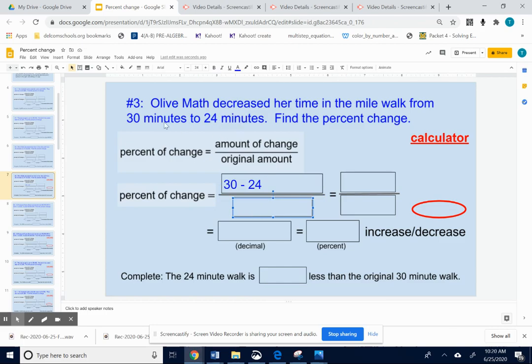Okay, so notice she walked from 30 to 24. 30 was mentioned first. Okay, so 30 is the original amount.